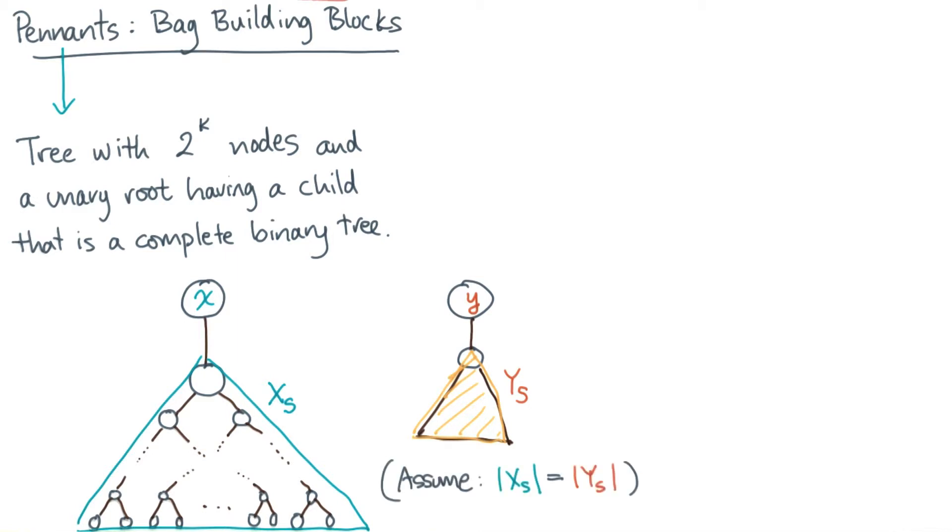So how do you quickly combine these two pennants into a new pennant? Here's one way. Let's choose one of the roots to be the new root of the combined pennant. Let's pick x for example. So let's chop x off and make it the root of the new pennant.